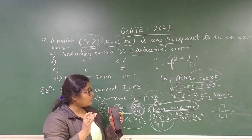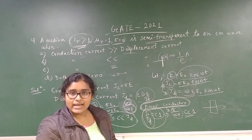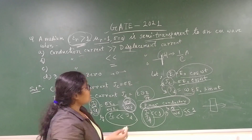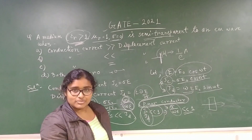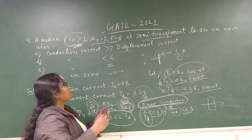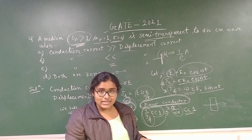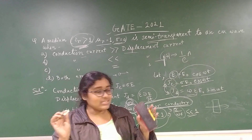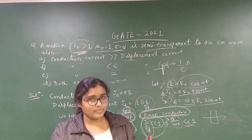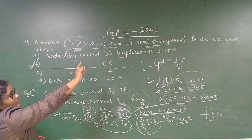In summary, the medium's conductivity and ε_r decide whether light is transparent to the medium or not. If ε_r is large — the medium is a poor conductor — the displacement current is much greater and light can pass through. But if σ is large — the material is a good conductor — the conduction current is much greater than the displacement current, and light cannot pass; there will be absorption, not transmission. So the answer is option B: the conduction current is very much less than the displacement current, when the medium is semi-transparent. We can also confirm from the given conditions: ε_r greater than 1 and σ equals 0.